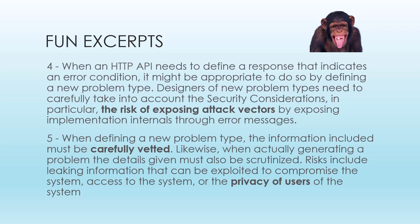Section five asks: what are those security risks? The information you're using and asking for should be carefully vetted. In addition, when you get information back, you should carefully scrutinize it — what did you just do to the user or the system? Risks include leaking information that can be exploited to compromise the system, access to the system, or the privacy of users. If we're linking all these systems together and creating new messages about what happened, there might be a little more exposure than we're comfortable with.